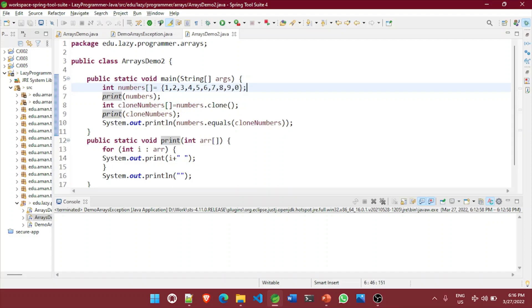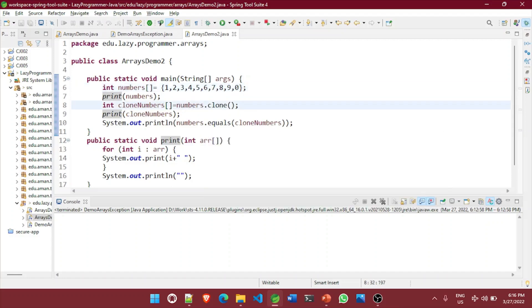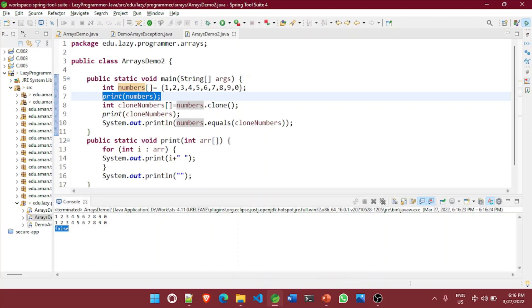So if we try to use equals operator, we should be getting false as an output here. So let's try to execute this program. So here you can see, I have printed first the original numbers array that I have cloned it and assign its values to the clone numbers and printed that as well. So it is coming out to be same, but when I try to use equals on both the objects, it has returned false. That means they are two different objects in the memory.